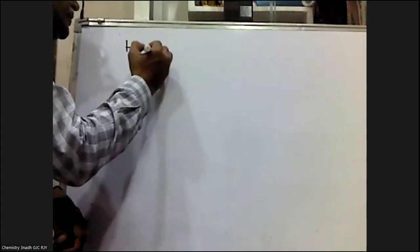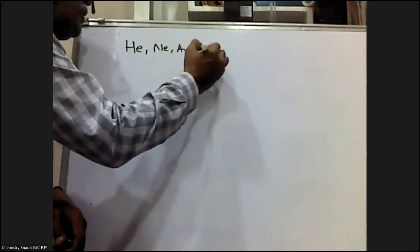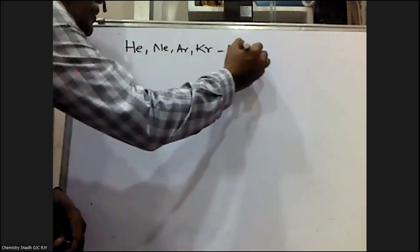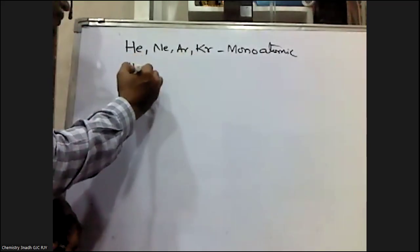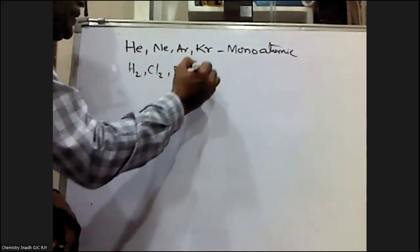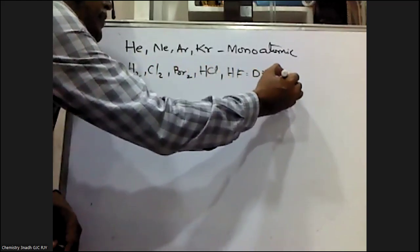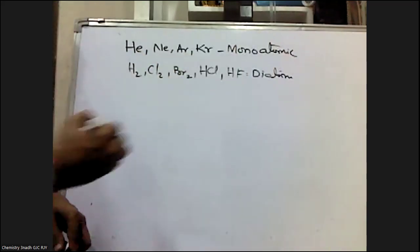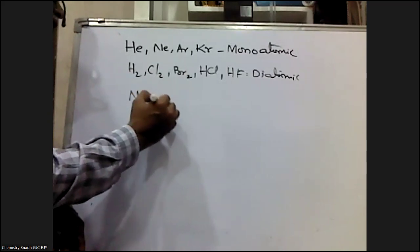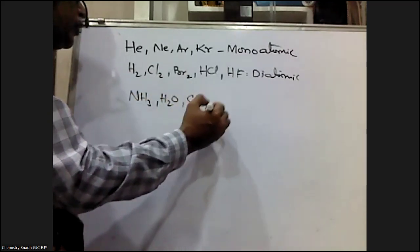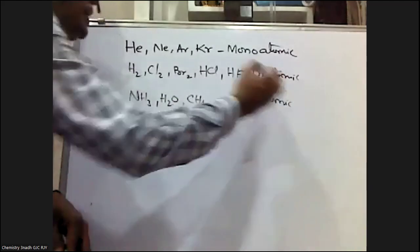Monoatomic examples include all Group 18 elements: helium, neon, argon, and krypton. Diatomic molecules include H₂, Cl₂, Br₂, HCl, HBr, and HF — all having two atoms. Polyatomic molecules include ammonia (NH₃), water (H₂O), and methane (CH₄), all having more than two atoms.